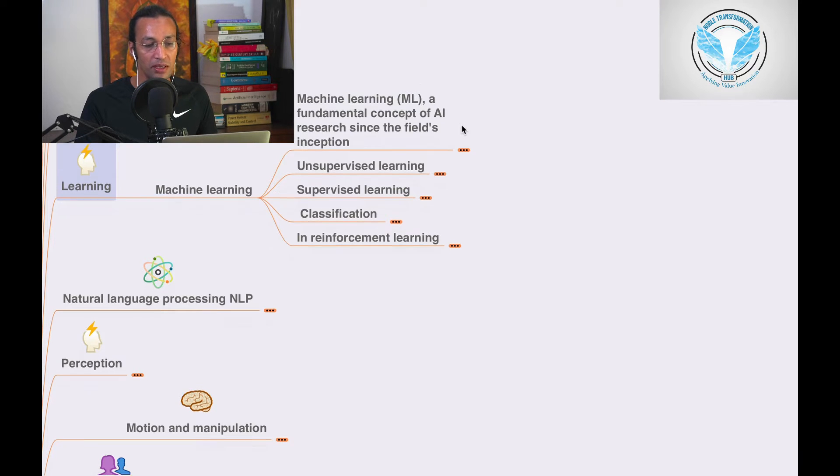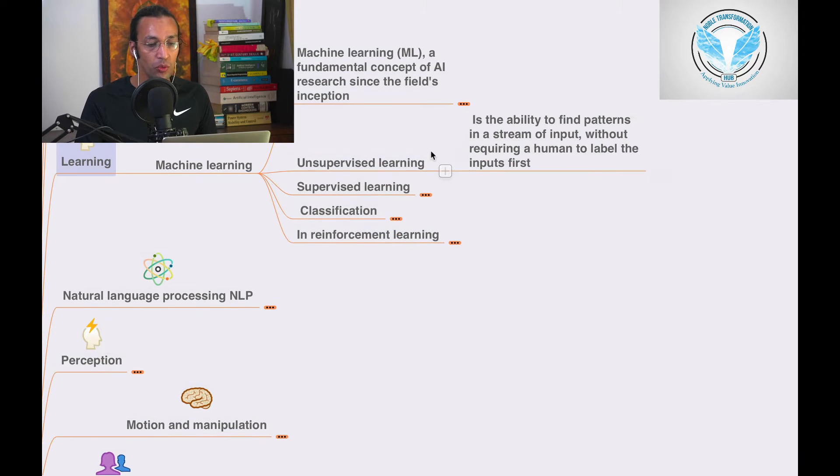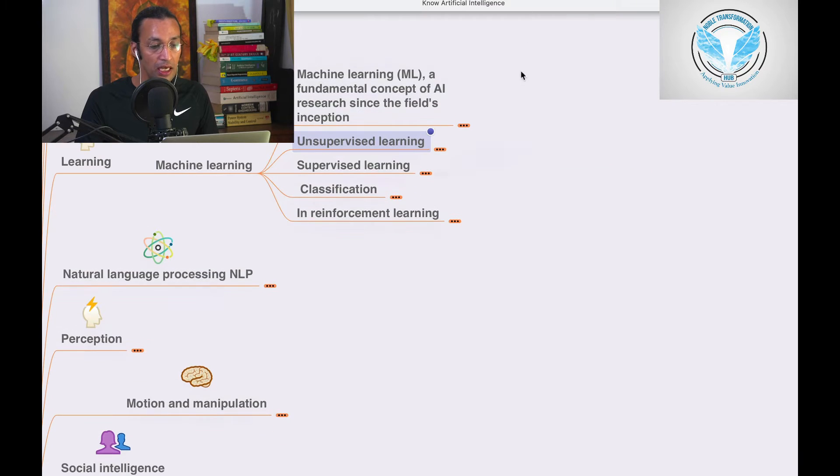Unsupervised learning is the ability to find patterns in the stream of input without requiring a human being to label the inputs first.